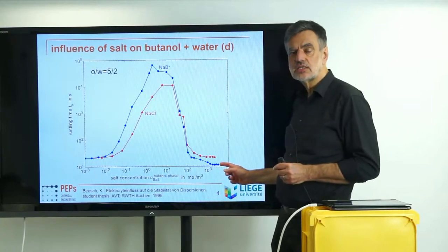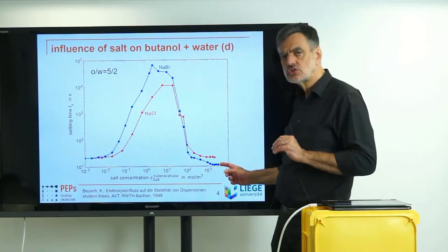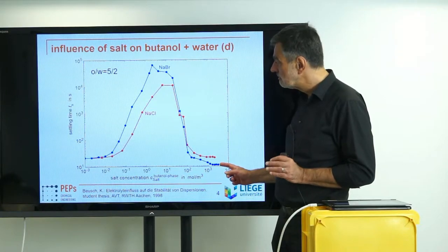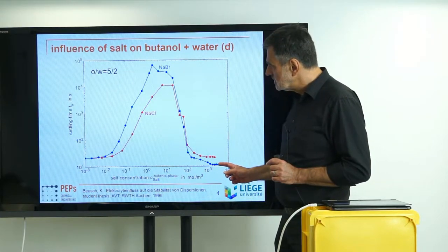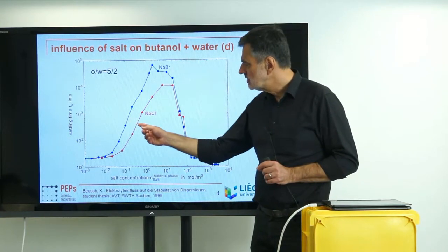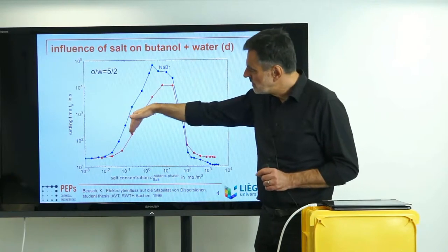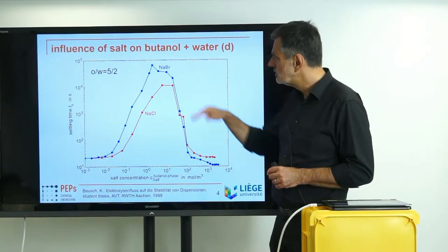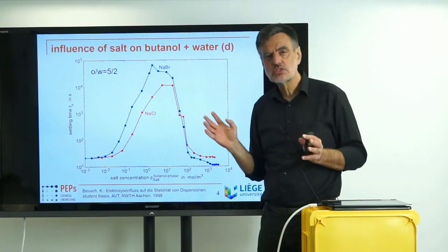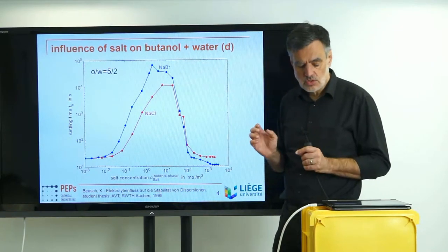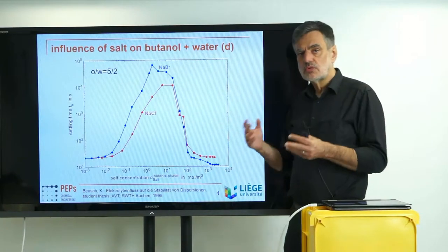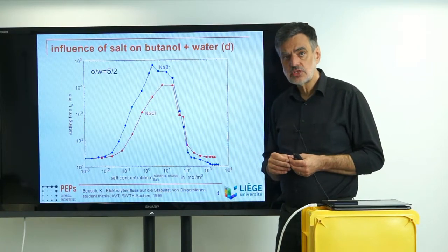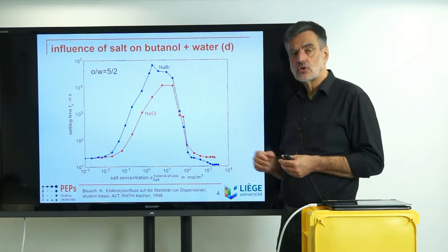One can show that in this case the drops, as soon as they come close to the major interface, directly coalesce — no closed-packed zone forms. The interesting thing is that for the two salts, the increase in settling times appears at slightly shifted concentrations, while the decrease occurs at more or less identical concentrations. There is also a difference in the level. So salts have a strong influence on this coalescence behavior. I propose, and we will see in some videos ahead, that the electrostatic potential difference between the phases is one of the causes for this behavior.